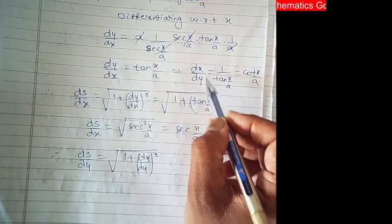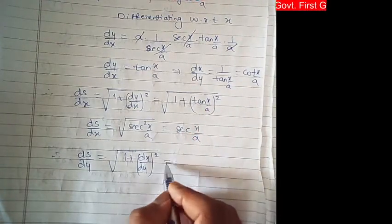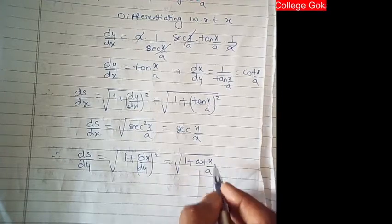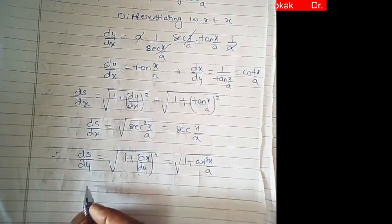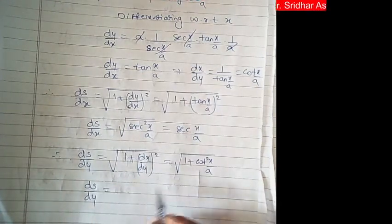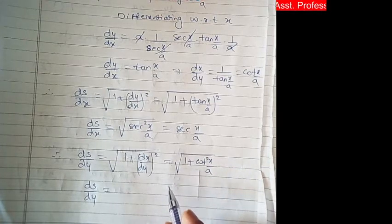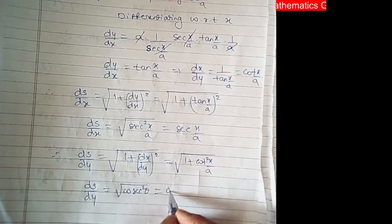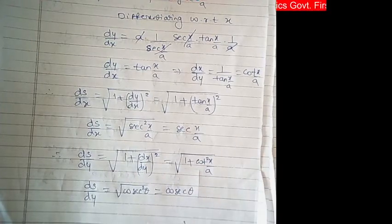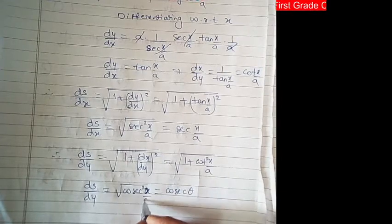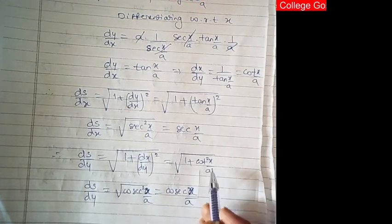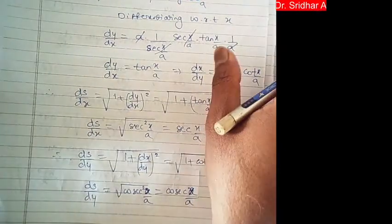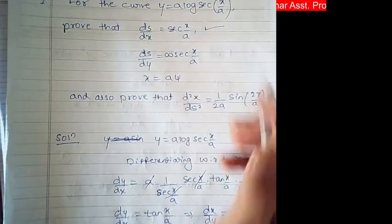So ds/dy = cosec(x/a). Therefore the second part is also proved.